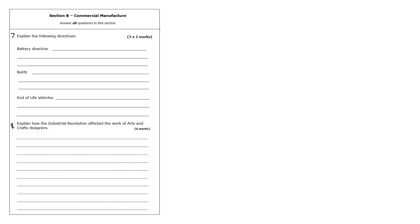The second part of the exam covers commercial manufacture — 50 marks in this section. The first question is about different directives — basically laws that manufacturers have to follow, usually to protect the environment, human health, or improve sustainability. Three that could come up are: the Battery Directive, RoHS, and End of Life Vehicles.